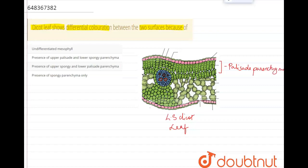And the cells that are arranged here with very loose spaces in between them, they are very loosely arranged over here. These are the spongy parenchyma.